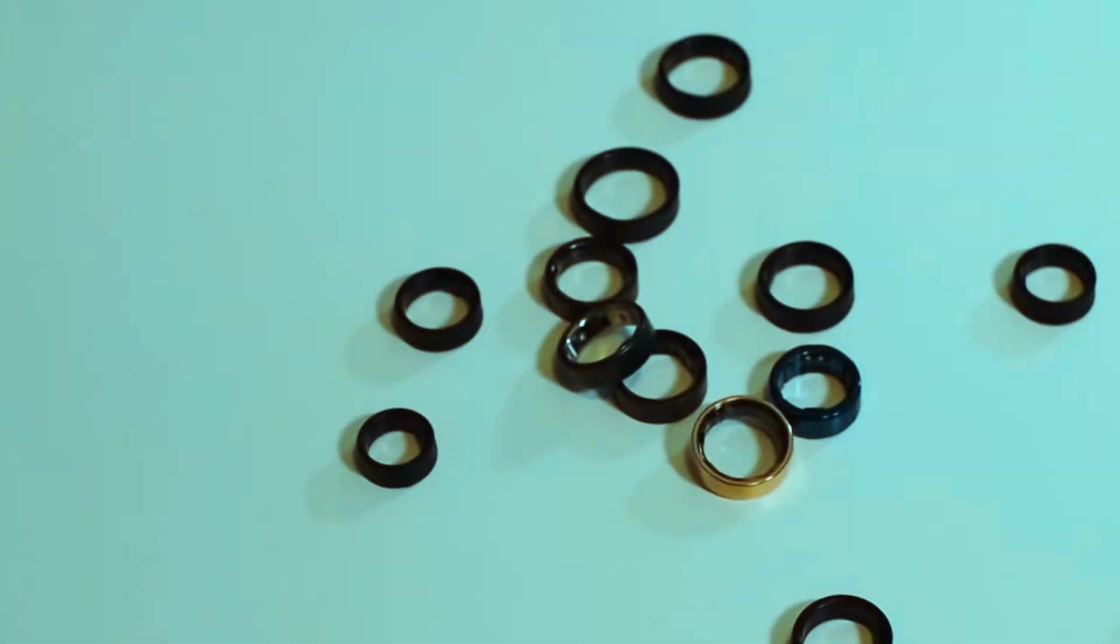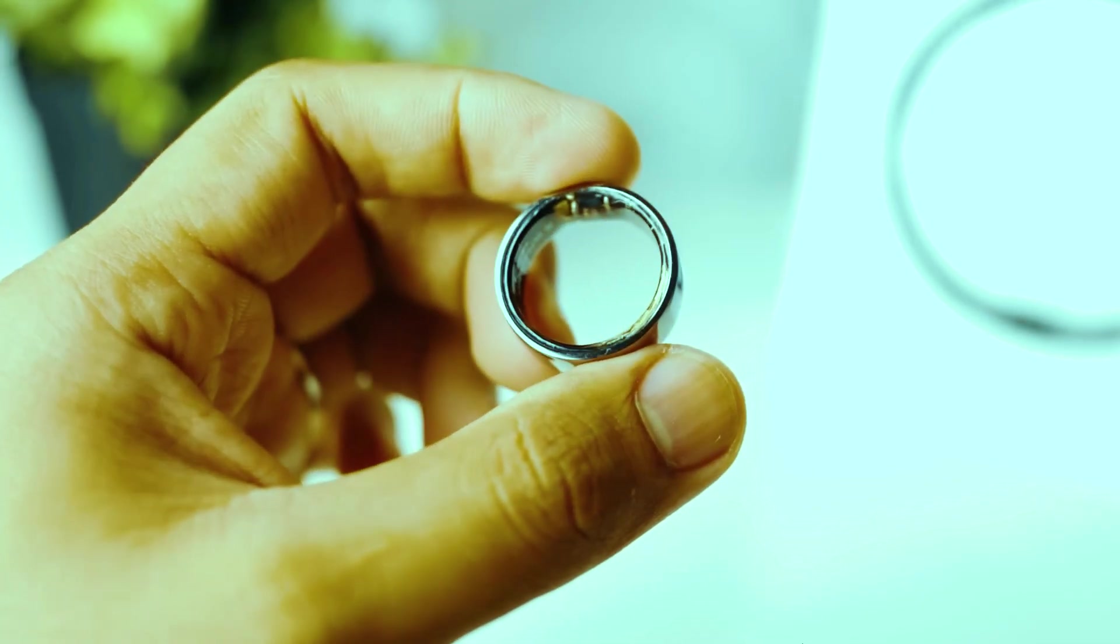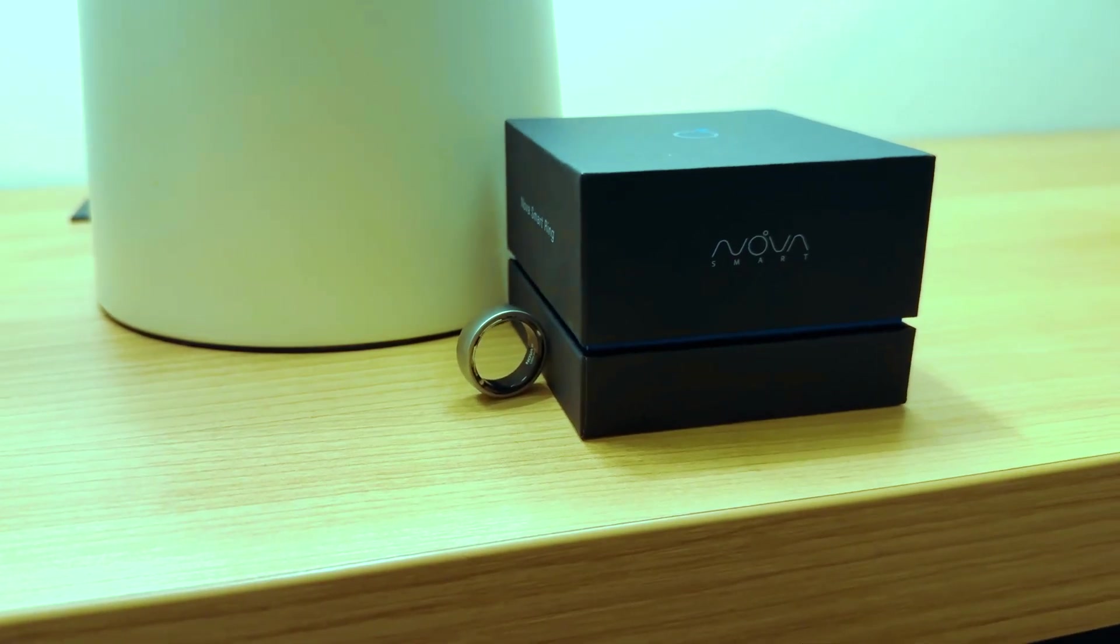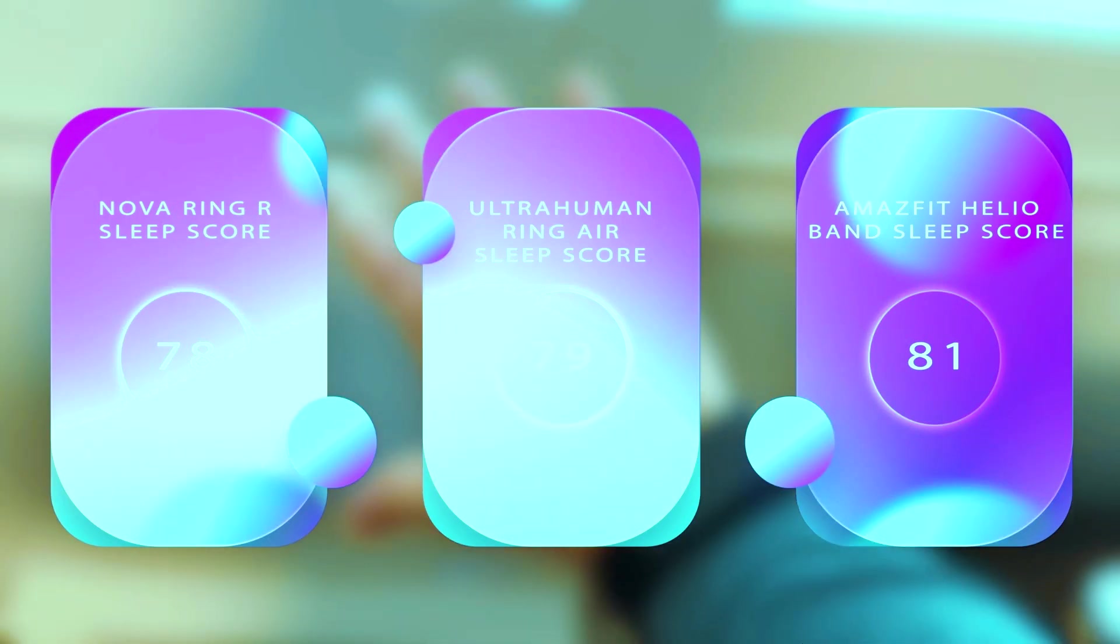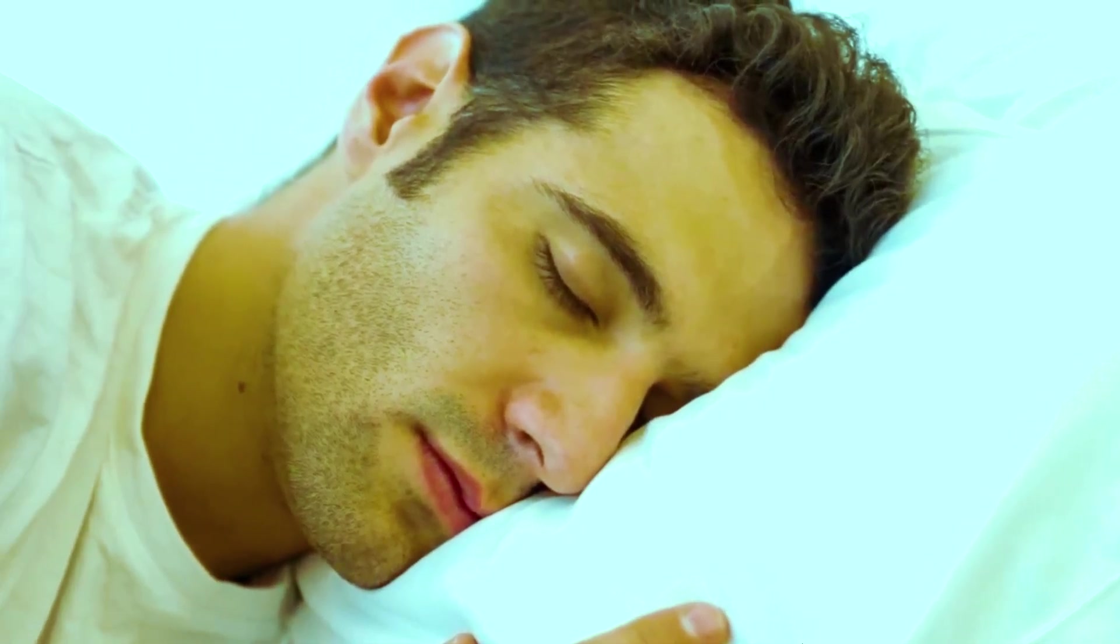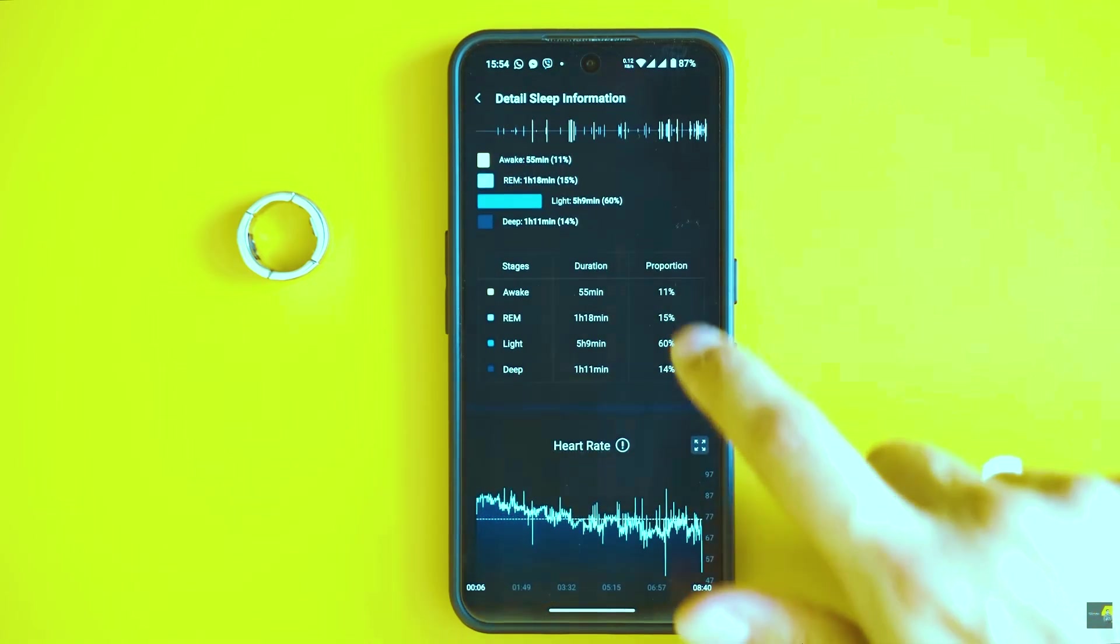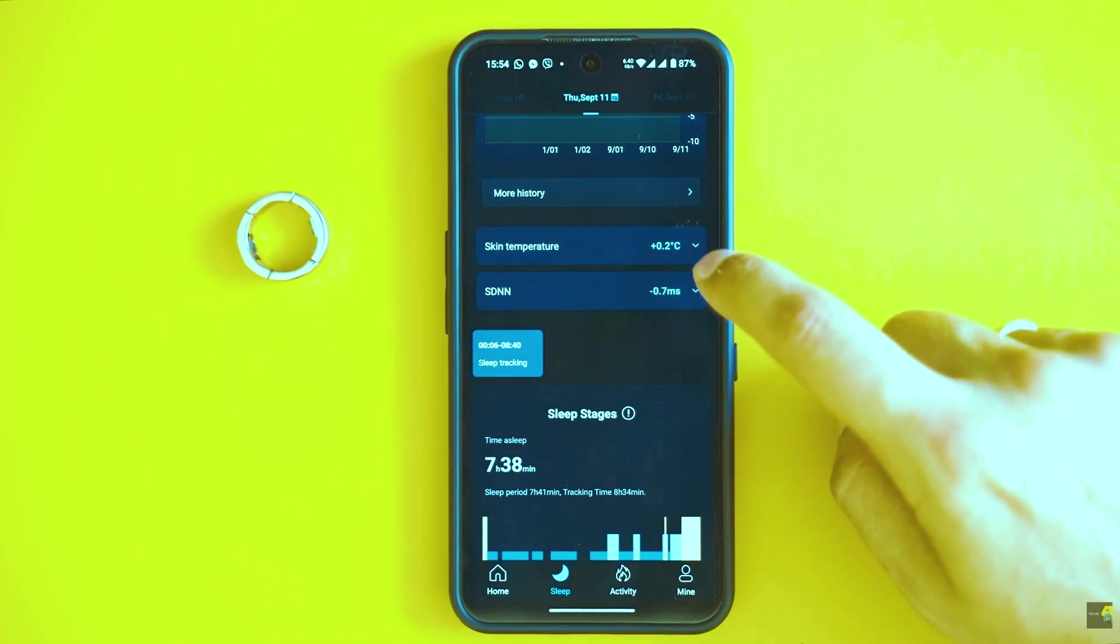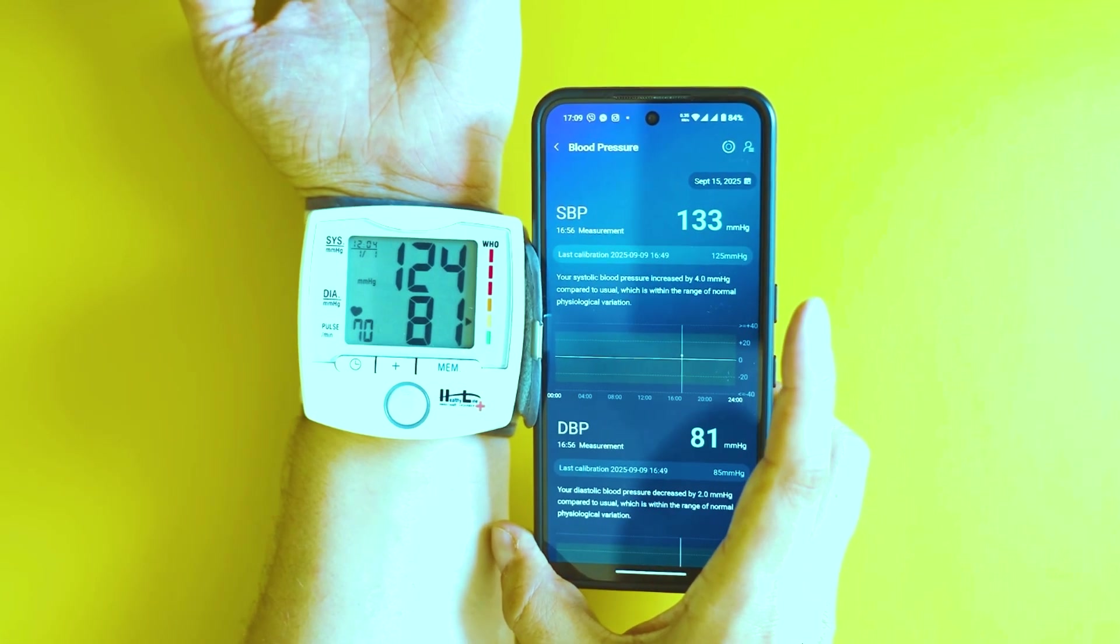At first, the smart ring feels almost magical—light, sleek, and unobtrusive. Users slip it onto their fingers expecting convenience, but what they discover is far more unsettling. The ring begins tracking minute details of their bodies that they never knew mattered: subtle fluctuations in heart rate, barely perceptible dips in oxygen, tiny disruptions in sleep cycles that escape even the most meticulous health logs. It doesn't just collect data, it analyzes, predicts, and begins to paint a portrait of its wearer with unnerving accuracy.